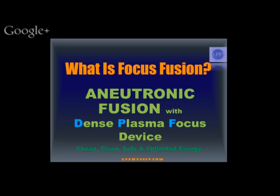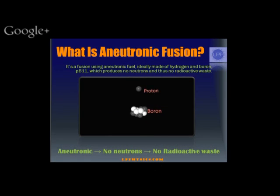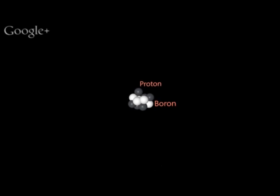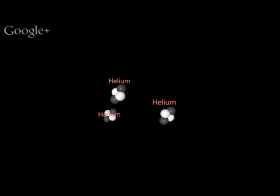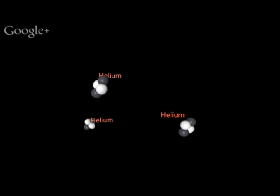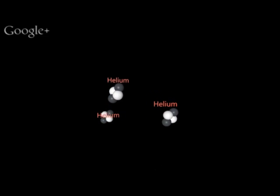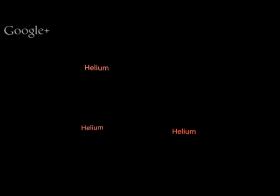Which raises the further question: what is a-neutronic fusion? My colleagues have talked a little about this, but it's worth repeating. A-neutronic fusion is fusion with fuels that produce no neutrons and therefore no radioactive waste, such as especially hydrogen and boron, which come together to produce only helium nuclei and no neutrons.